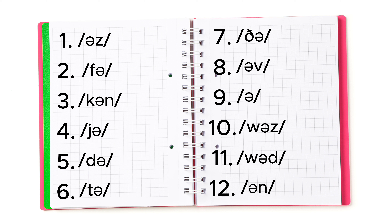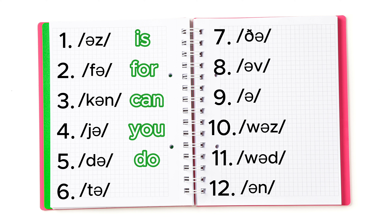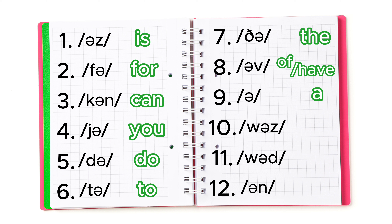Here are the answers: 'z' is 'is', 'f' is 'for', 'can' is 'can', 'y' is 'you', 'd' is 'do', 't' is 'to', 'the' is 'the', 'of' or 'have', 'a' is 'a', 'was' is 'was', 'would' is 'would', and 'n' is 'an' or 'and'.